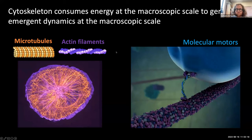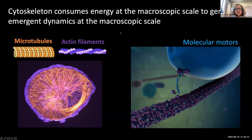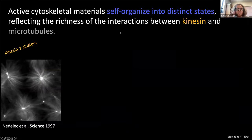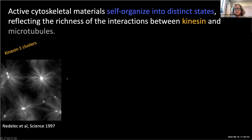I'm going to focus on kinesin motors and microtubules. The self-organization of those two proteins has been studied since the early 90s — pioneered by Nedelec and Surrey — who showed that stabilized microtubules and clusters of kinesin motors create beautiful asters. However, over the past 20 years, many new experiments have shown that with very similar building blocks you can have very different types of structures and dynamics.